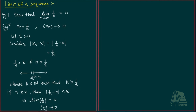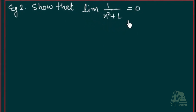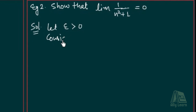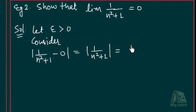Chalo, kuch aur examples dekhte hain. We have to show that limit of 1/(n² + 1) equals 0. Yahan, xn kya hai? 1/(n² + 1). To sabse pahle, hum kya leke chalte hain: let epsilon greater than 0. Now consider — we have to consider xn minus x, that is |1/(n² + 1) minus 0|. Now this one equals to 1/(n² + 1), aur yeh positive number hai, so we can avoid this modulus sign. So that is, this one equals to 1/(n² + 1).